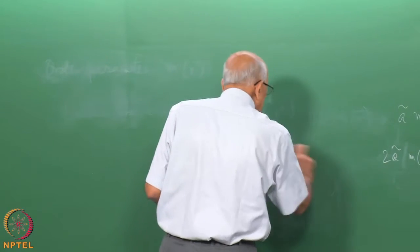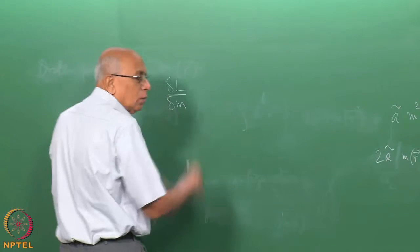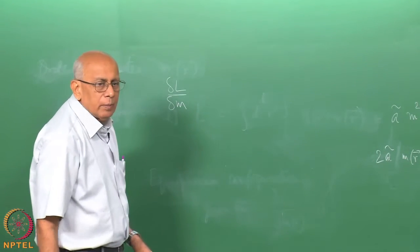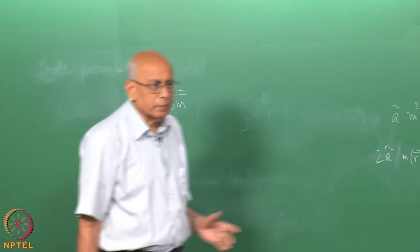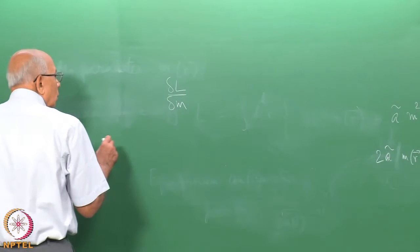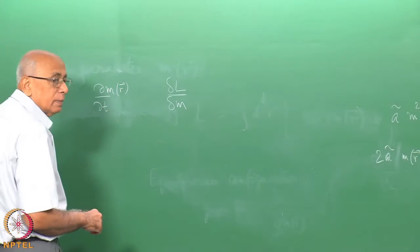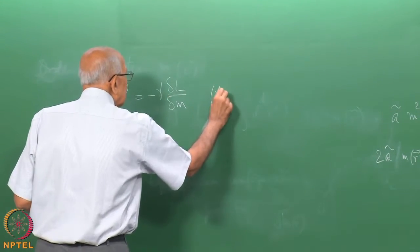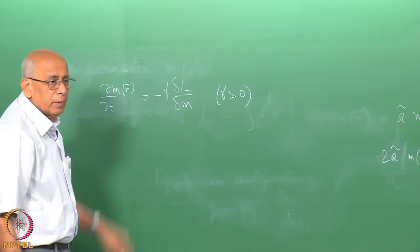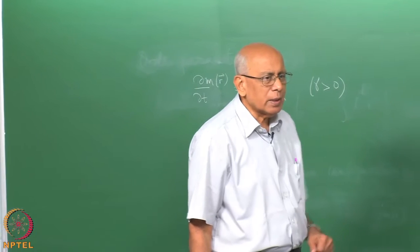A good assumption is to say: for a given configuration, delta L over delta M is zero in equilibrium, and away from equilibrium this quantity measures the deviation from equilibrium. So a good guess is that the time derivative of a configuration M of R relaxes to equilibrium by minus a constant gamma times this deviation. That is a typical relaxation equation, exactly in the same spirit as relaxation in the Langevin equation or the Boltzmann equation.